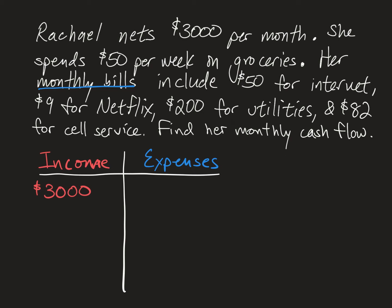Rachel has five expenses. For the known monthly bills we can just write down: $50 for internet, $9 for Netflix, $200 for utilities, and $82 for cell service. These numbers are underlined here.